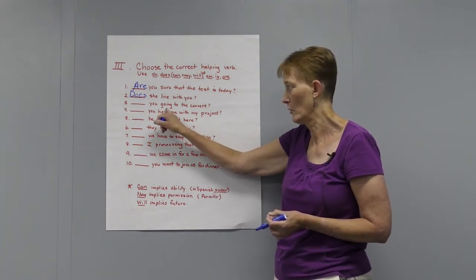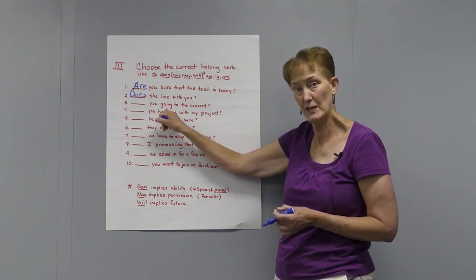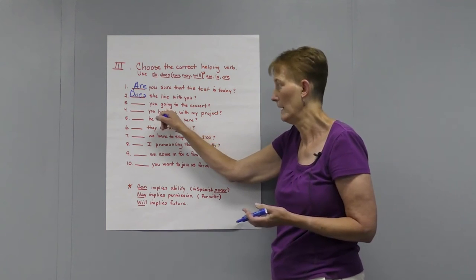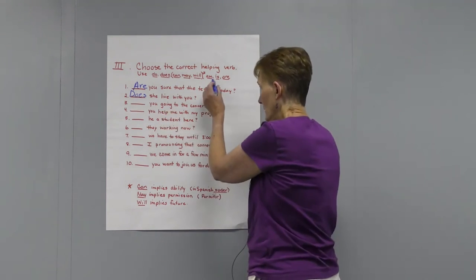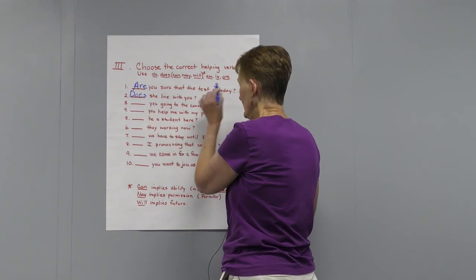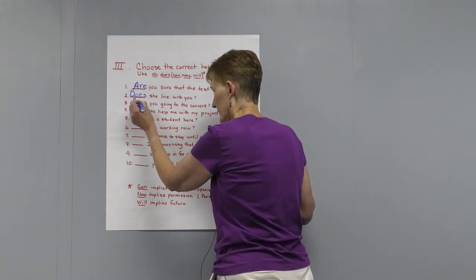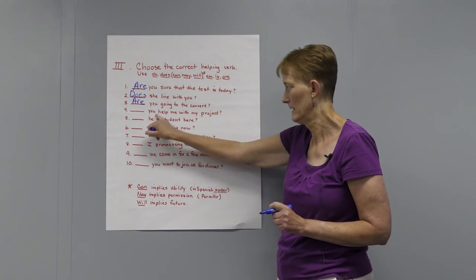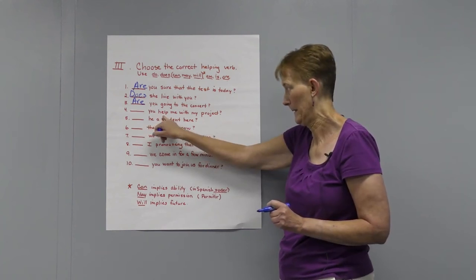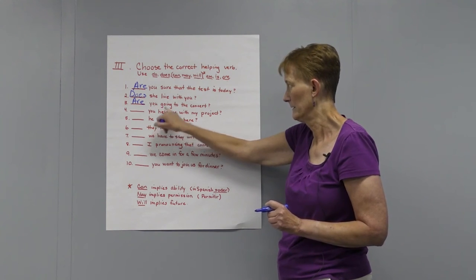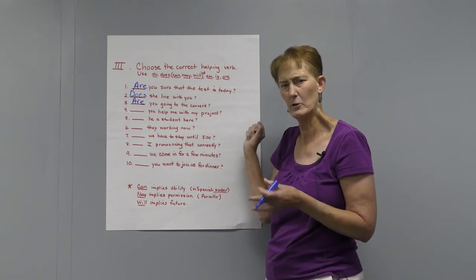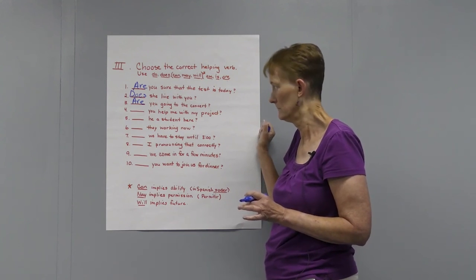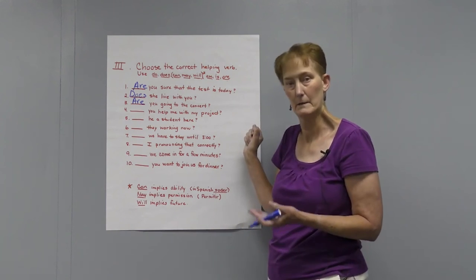Here's another one. 'Going' is an -ing form of the verb, and if you remember, with the -ing form we use a form of to be as our helping verb. So with subject 'you,' we use 'are.' Are you going to the concert? 'Help' is the verb here. Do you help me with my project is a little bit awkward. Can you help me? Do you have the ability or the time to help me?